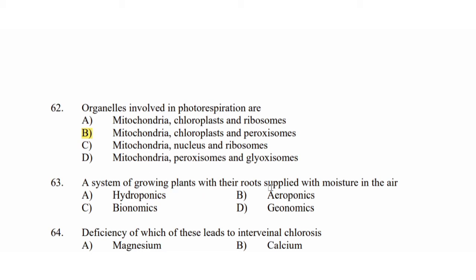Question 62: System of growing plants with the roots applied with moisture in the air — a high-tech agriculture method. Option A: hydroponics. Option B: aeroponics. Option C: bionomics. Option D: genomics.